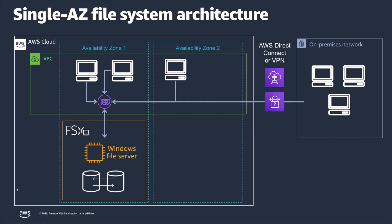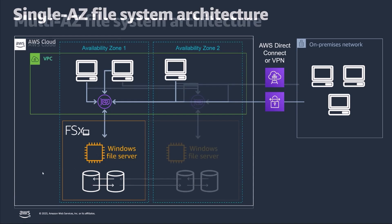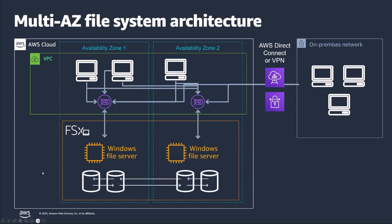We're going to spend more time on the Multi-AZ file system, because that's where we'll be leveraging continuously available shares. In the Multi-AZ architecture, you can see redundant infrastructure deployed across two availability zones, allowing access from multiple AZs and on-premises networks to your Amazon FSx file share.